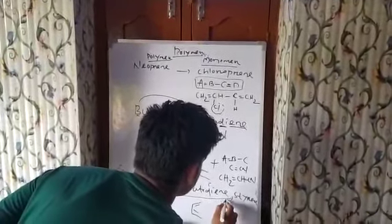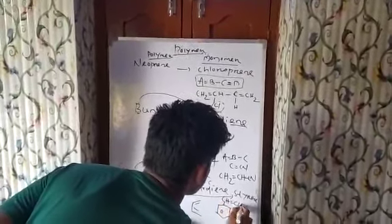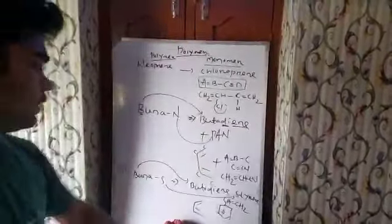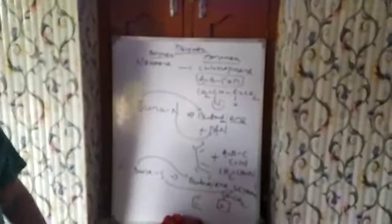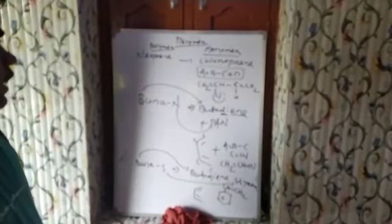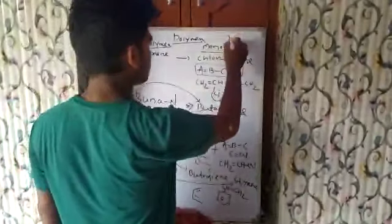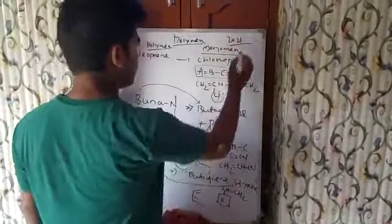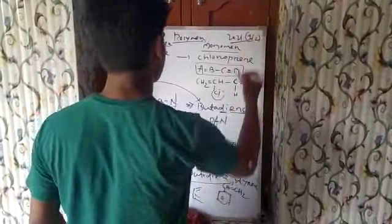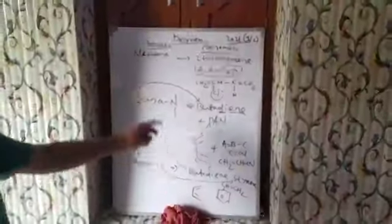And styrene structure already discussed. That is A double bond B, C is single bond CH2, benzene ring with CH2. This is Buna S monomers.